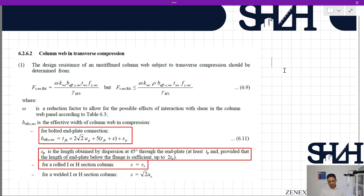s is taken as rc for a rolled I or H section column, which is rc + tf of the column. ap is given in the other figure as tf of the beam. If you go through Figure 6.6 on transverse compression on an unstiffened column, case A, we can see ap is given as the throat thickness of the weld.